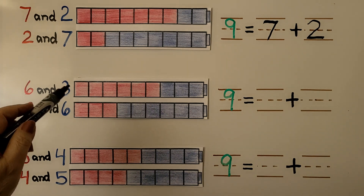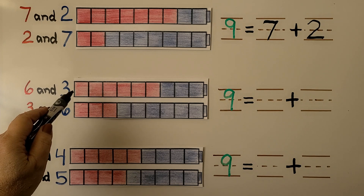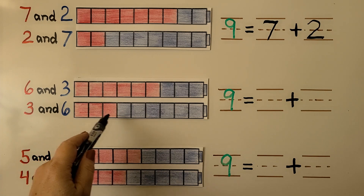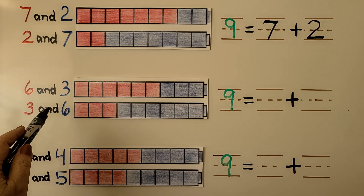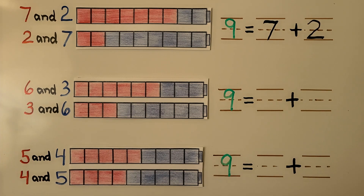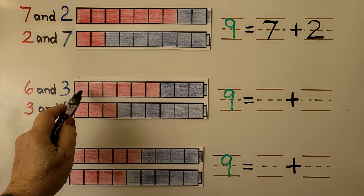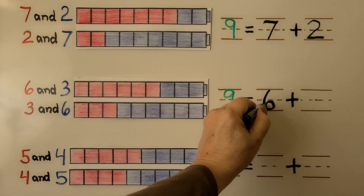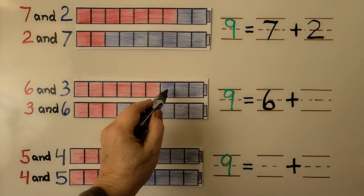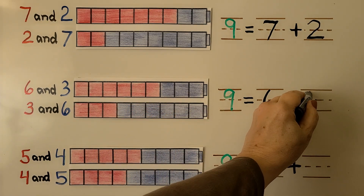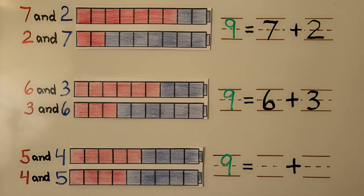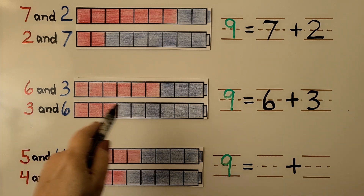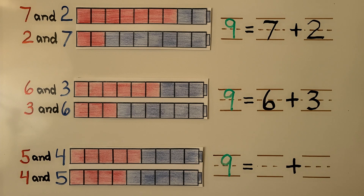Here we have nine cubes in the cube train, and we have six red and three blue. We can switch it around to be three red and six blue. Six and three is a number pair that is equal to nine when added together. We have one, two, three, four, five, six — we can write the six — that's the red ones. And we have one, two, three blue — we can write three for the blue. Nine is equal to six plus three, and we can say three plus six because the order doesn't matter. They'll still be equal to nine when added together.